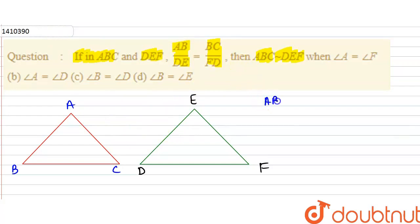You are given AB upon DE equals BC upon FD. If you have given this, then Triangle ABC is similar to Triangle DEF.